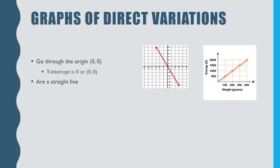So the graph of a direct variation goes through the origin, so its y-intercept is (0, 0). And it is a straight line. There's no curve, there's nothing. It just goes right through the origin.